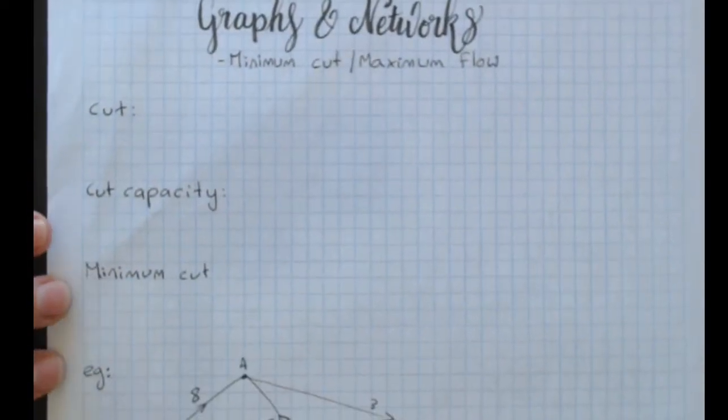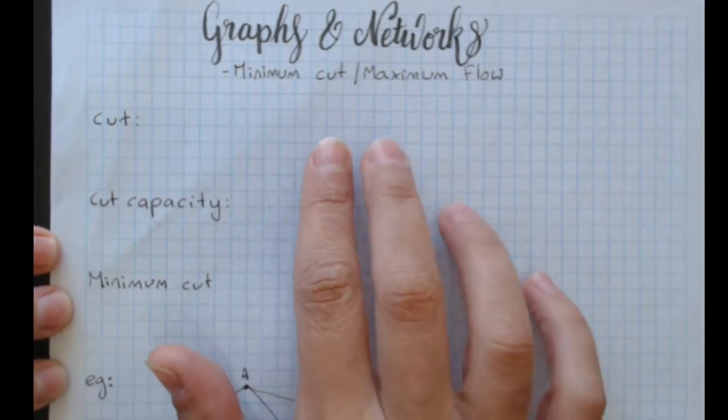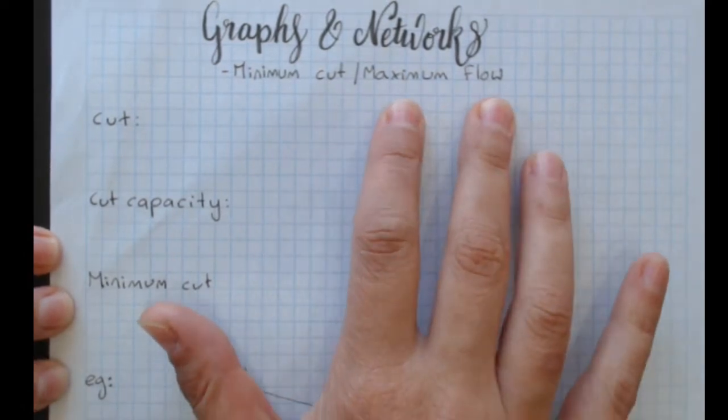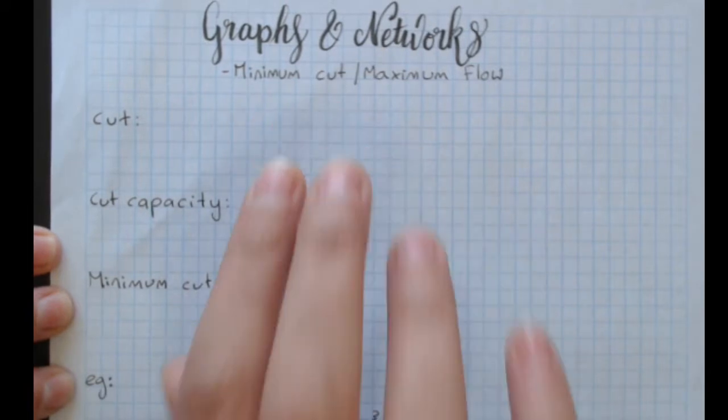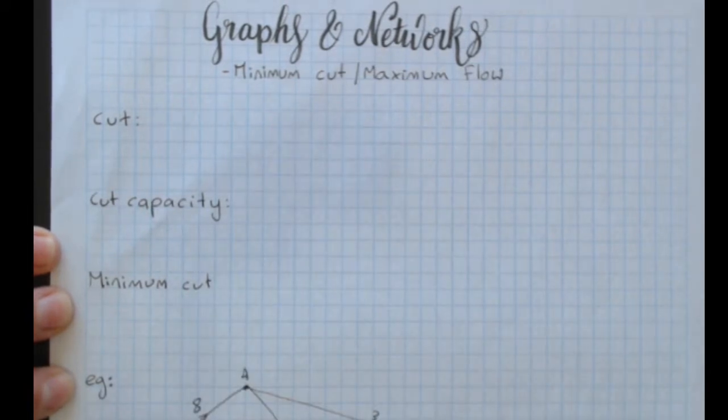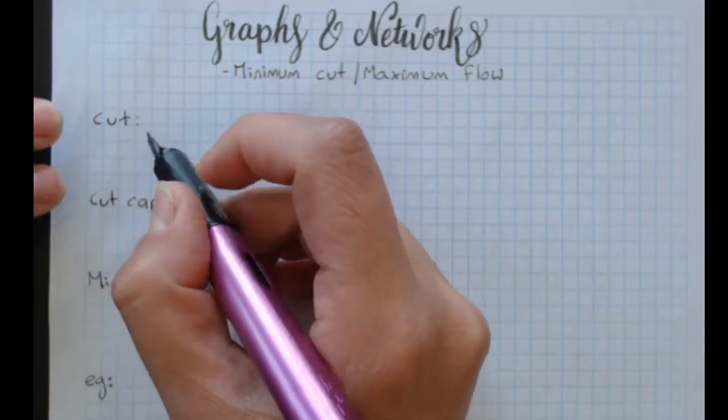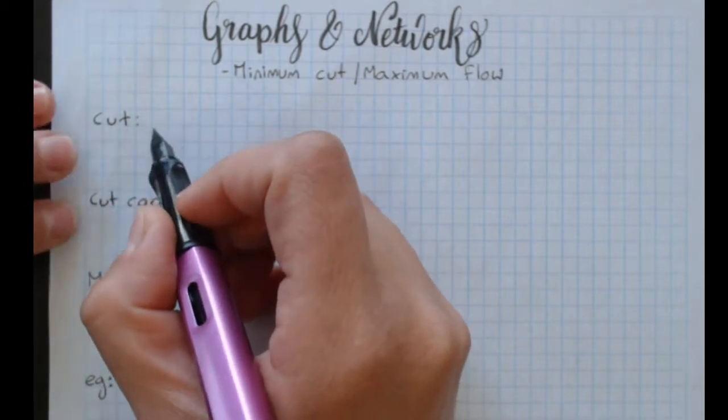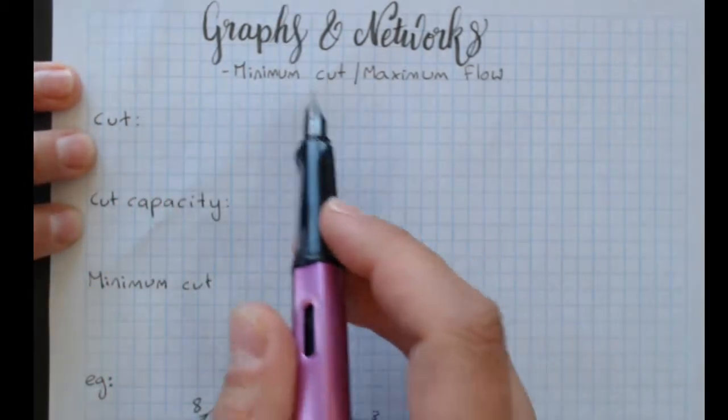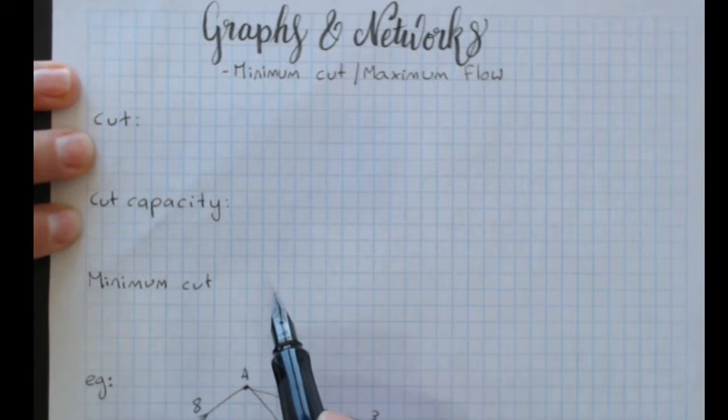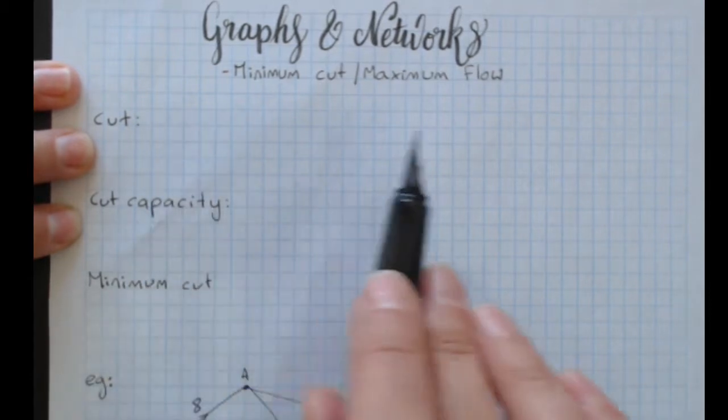Our options for finding maximum flow are often about cuts in the graph. The maximum flow is obviously the maximum amount of stuff that can flow through the system. It's often hard to work out just by inspecting, so there's a method where we search for cuts. A cut is literally cutting through the network, separating the source from the sink.